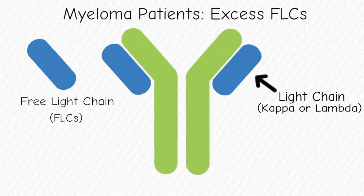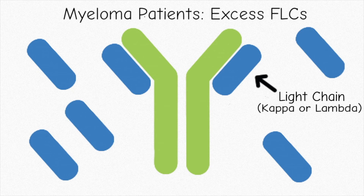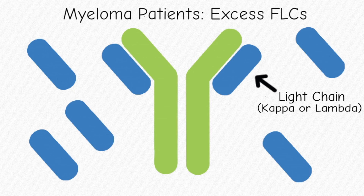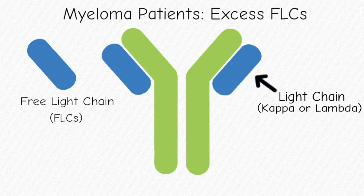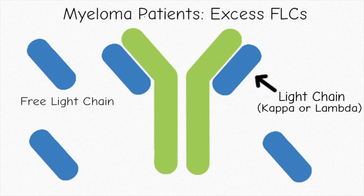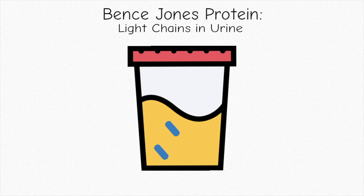When you don't have enough heavy chains, the free light chains get released into the blood. This is common in multiple myeloma patients because they have an abnormal amount of plasma cells making these immunoglobulins. These light chains can also be found in your urine as a Bence-Jones protein.